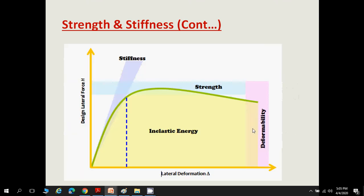From the graph, one region shows the stiffness of a member and another region shows the strength. Strength is the load registered by the member before it goes to failure. Within the elastic limit, the material or element behavior is known as stiffness. This is a graph between design lateral force H and lateral deformation δ. When a lateral force acts on a building element, the resulting deformation represents stiffness, while the maximum load the member can carry before failure represents strength.